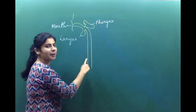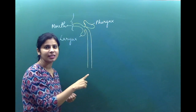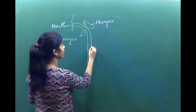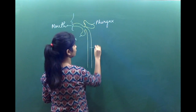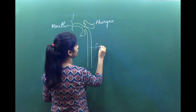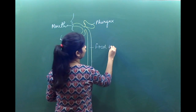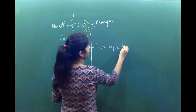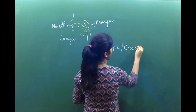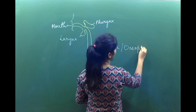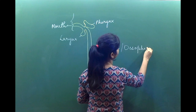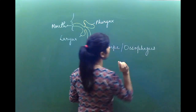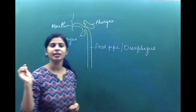This food pipe structure is like a wind pipe — we call it the esophagus. The common name is food pipe and the biological word is esophagus. It starts from this point here.